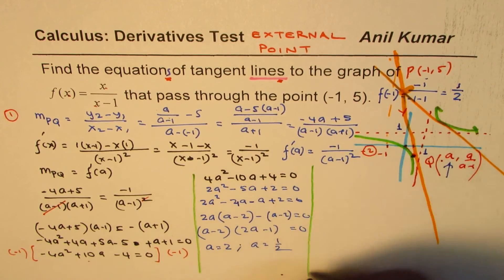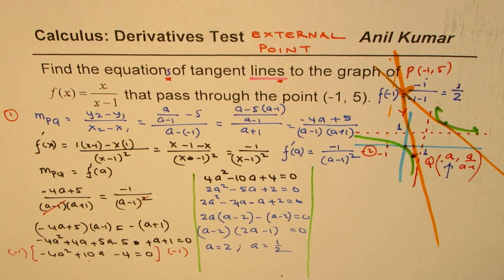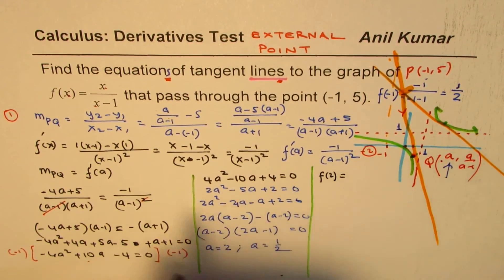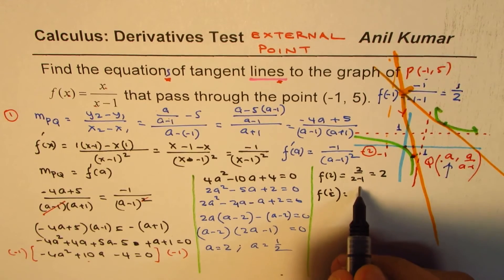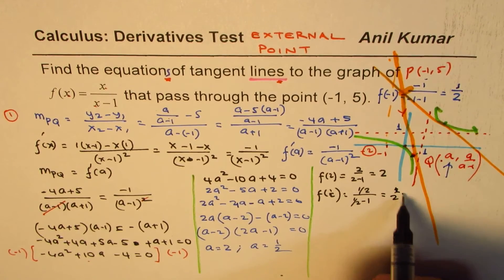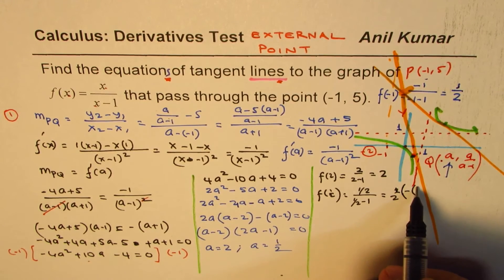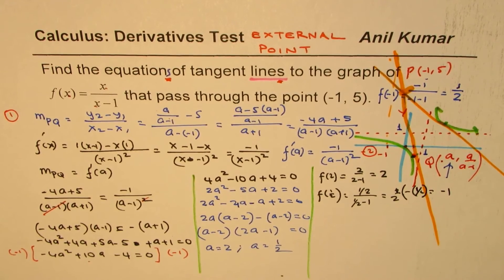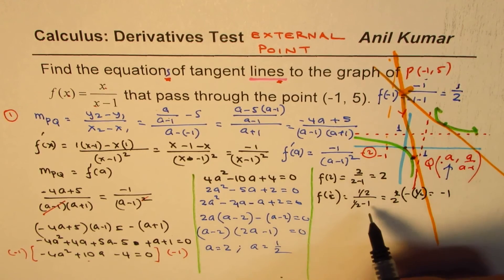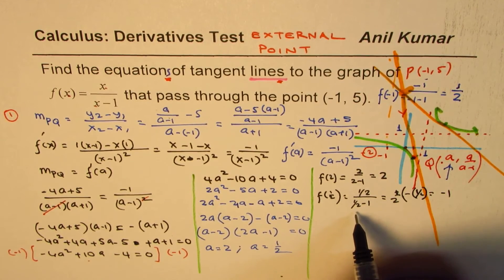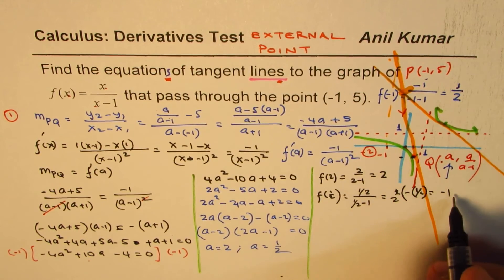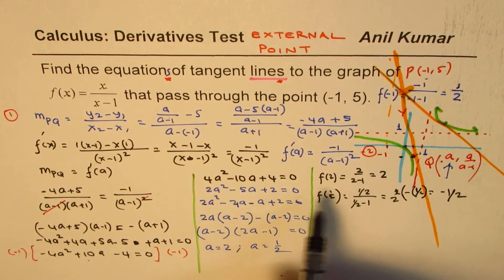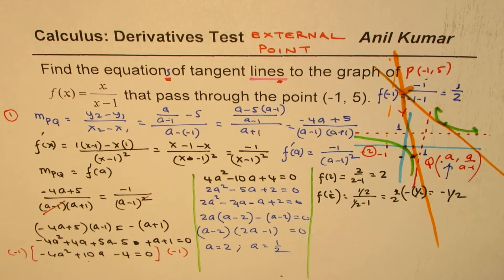Now let's find the y-values. For a = 2: f(2) = 2 over (2-1) = 2. So the point is (2, 2). For a = 1/2: f(1/2) = (1/2) over (1/2 - 1) = (1/2) over (-1/2) = -1. So the point is (1/2, -1). We now have both tangent points, and we just need to find the equations of the tangent lines.